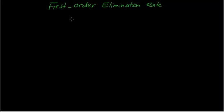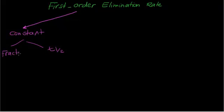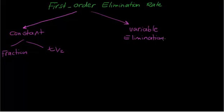The second topic is the first-order elimination rate, a little bit easier than the zero-order. In first-order kinetics, you have two constants. The half-life is constant, which is the opposite of zero-order kinetics. The other thing — which is confusing but is also constant — is that a fraction of the drug being eliminated is constant. Finally, the elimination rate is the variable, meaning it is not fixed.